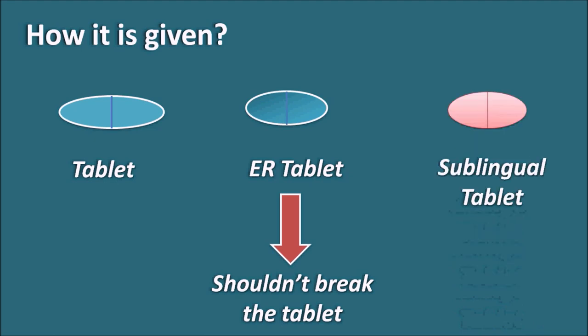Zolpidem can also be given as a sublingual tablet, which is placed under the tongue where the drug is absorbed directly into the systemic circulation without first-pass metabolism. Sublingual tablets have the advantage of avoiding first-pass metabolism and producing immediate action because the drug directly reaches systemic circulation.